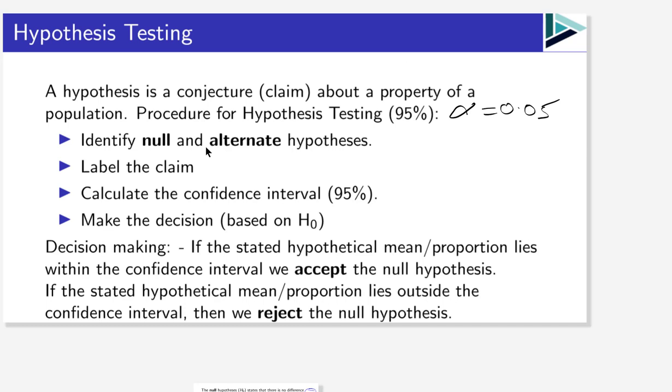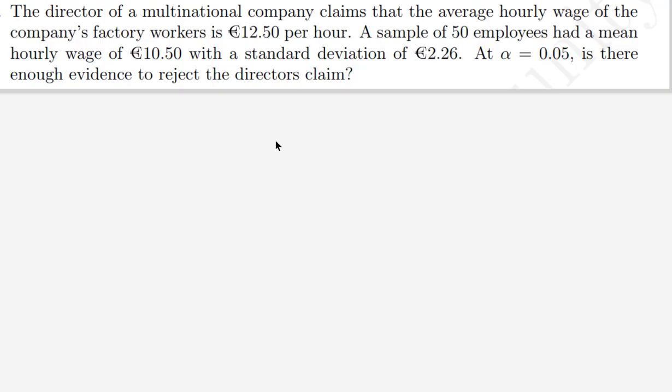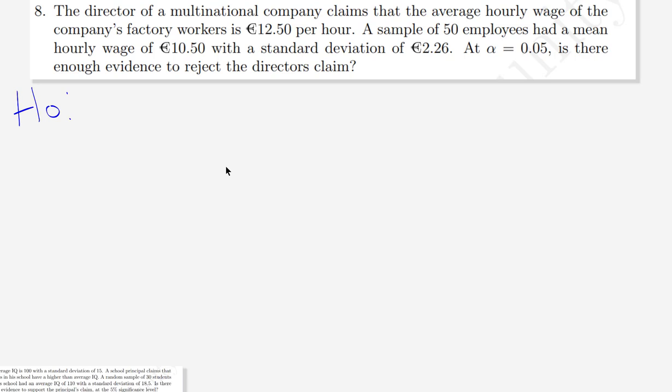We'll follow the exact procedure already discussed. The first step: identify the null and alternate hypotheses. The null hypothesis always contains the equals sign. We label it H0, and the alternate is labeled Ha or H1, which contains the not-equals sign. This is a question on means, so the symbol for population mean is mu.